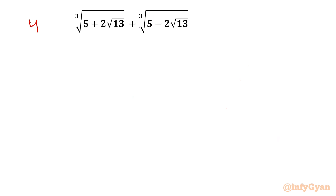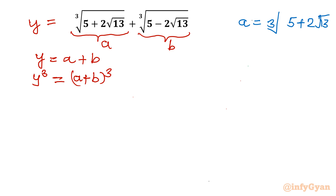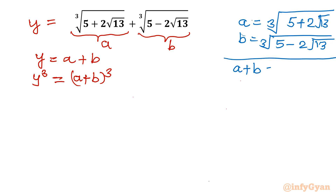I will begin by letting the given expression equal y, then substituting the first cube root as a and the second cube root as b. So our expression is y = a + b. Now I will consider cubes on both sides, so I will write y³ = (a + b)³. Our substitution is: a = cube root of (5 + 2√13) and b = cube root of (5 − 2√13).